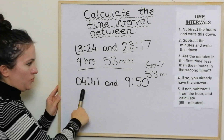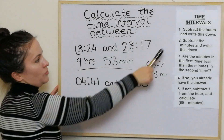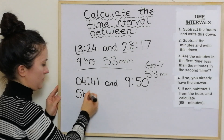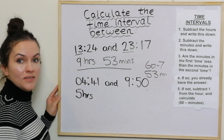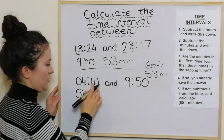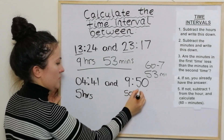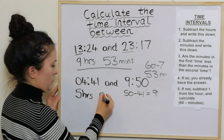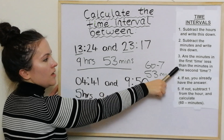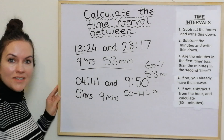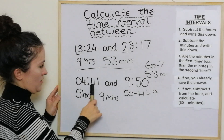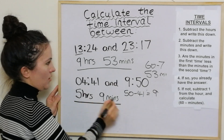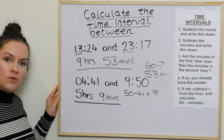The next one — we'll go through the steps. We subtract the hours: 50 take away 41 is just 9. Are the minutes in the first time less than the minutes in the second time? The answer is yes, so we already have the answer. Hopefully you all got that and it all made perfect sense.